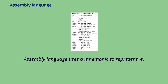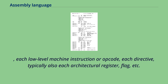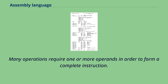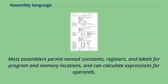Assembly language uses a mnemonic to represent each low-level machine instruction or opcode, each directive, typically also each architectural register, flag, etc. Some of the mnemonics may be built-in and some user-defined. Many operations require one or more operands in order to form a complete instruction. Most assemblers permit named constants, registers, and labels for program and memory locations, and can calculate expressions for operands.